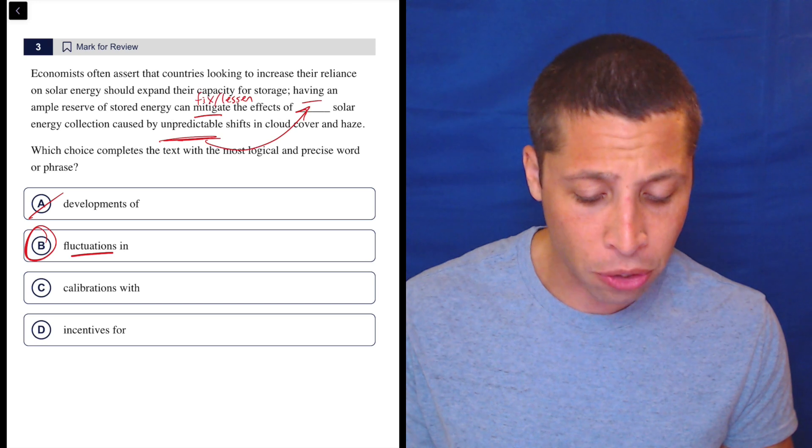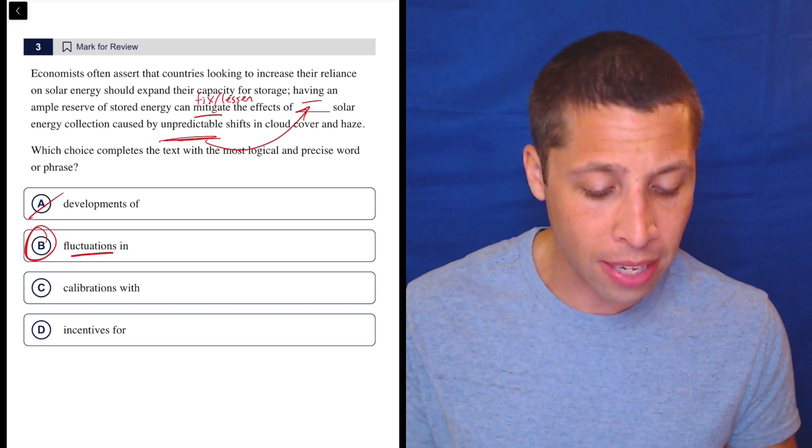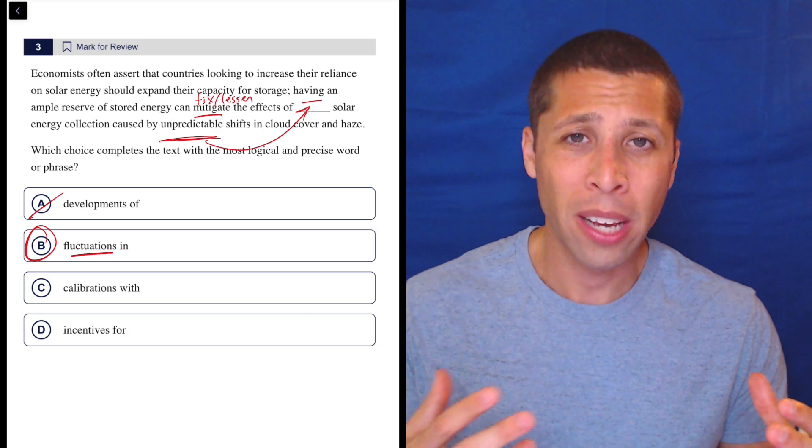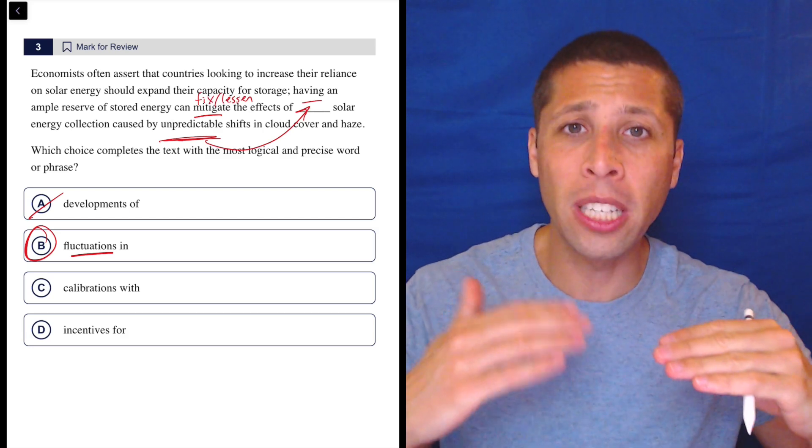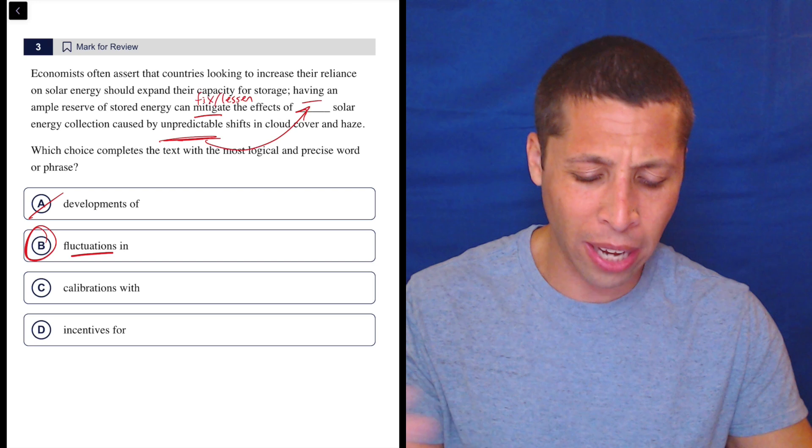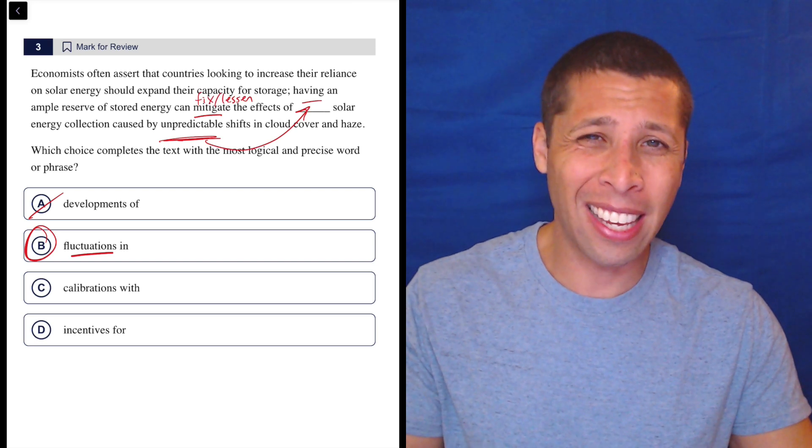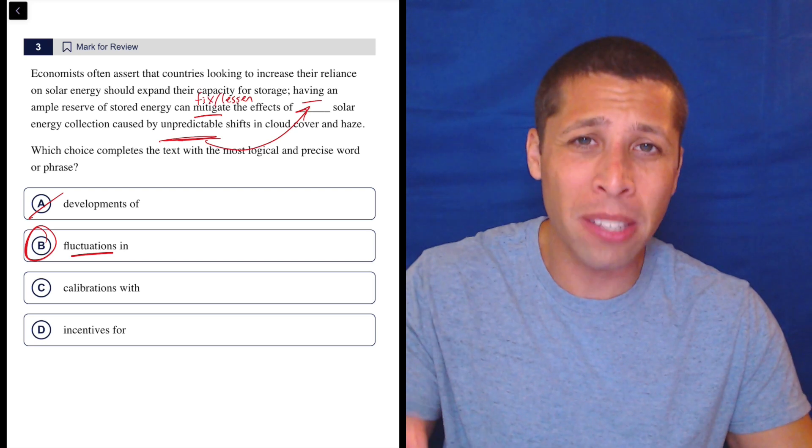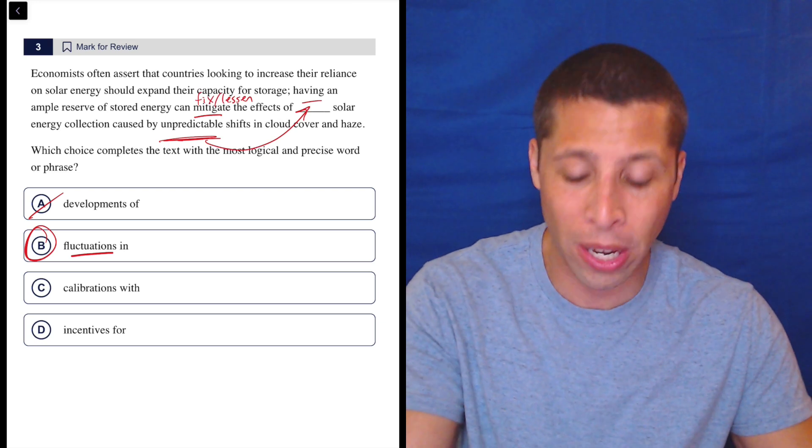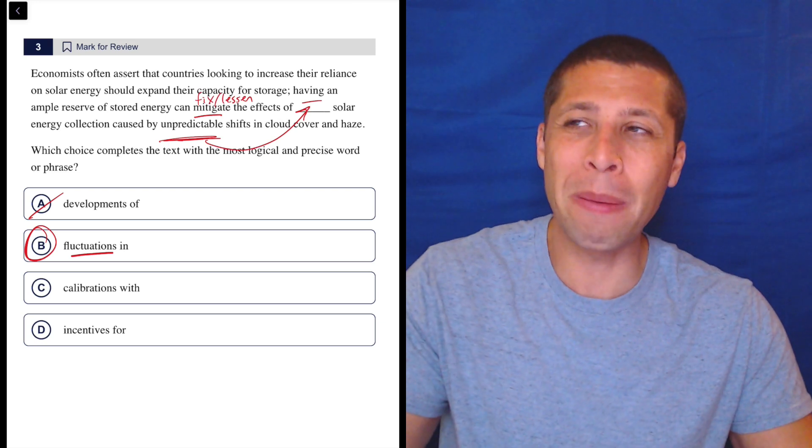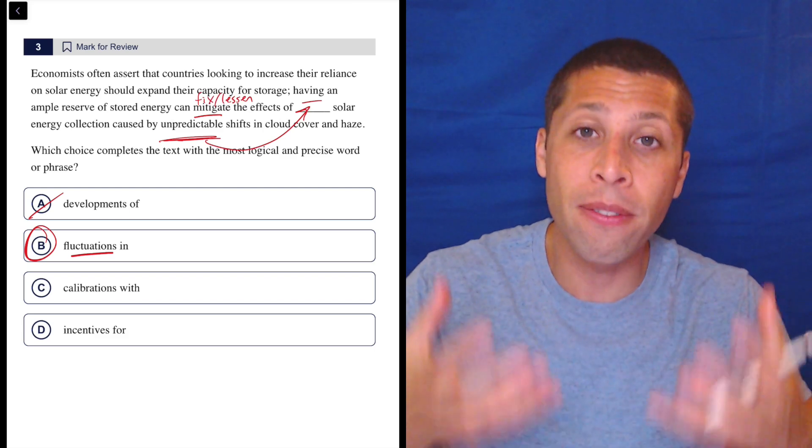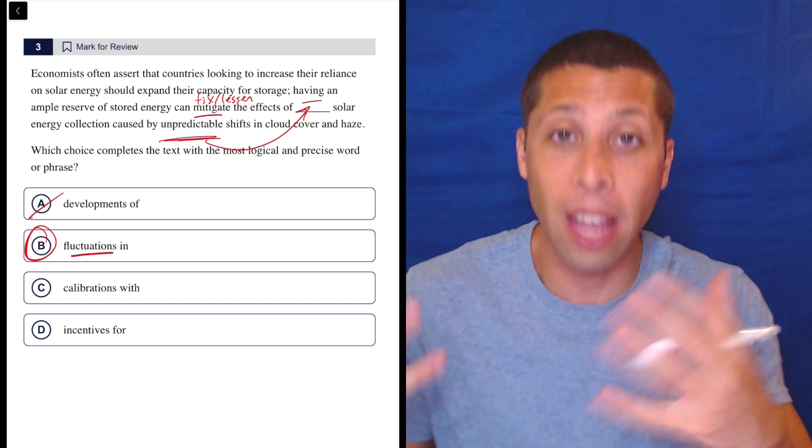Having an ample reserve of stored energy can fix the effects of calibrations. To calibrate is to kind of set a machine up so that it's reading the right things. So we're calibrating solar energy collection—I guess maybe. But the problem is that we can't calibrate it because of the unpredictability, because of the fluctuations. So C is a word that maybe isn't the worst thing to put in that blank, but it doesn't in any way convey that strong word we saw later, that word unpredictable.